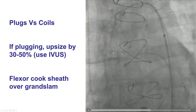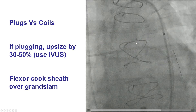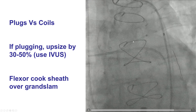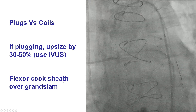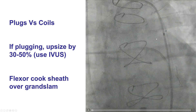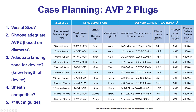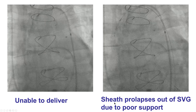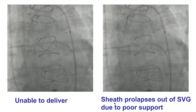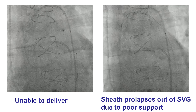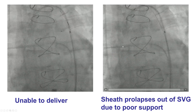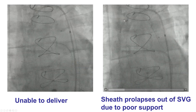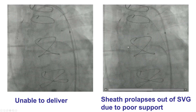The challenge with delivering those plugs is that we have to remove the guidewire. So in this case, we inserted a Flexor Cook sheath over a Grand Slam extra-supportive guidewire into this vein graft to obtuse marginal branch, and then we had to choose the size of the Amplatzer vascular plug. We did IVUS of the SVG and the diameter was about 4 millimeters, therefore we decided to deliver a 6 millimeter Amplatzer vascular plug type 2, which is 50% oversized compared with the vessel. Unfortunately, it was tough to deliver it over that Cook sheath — the support was poor — so once the plug tried to take the bend to enter into the saphenous vein graft, everything came out.